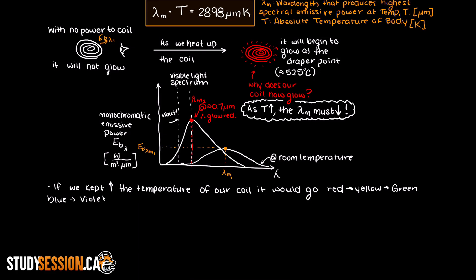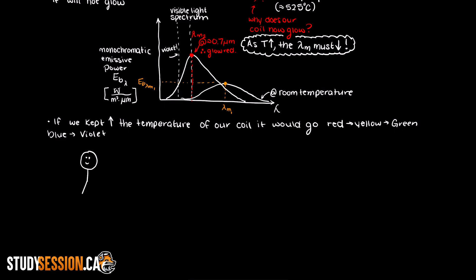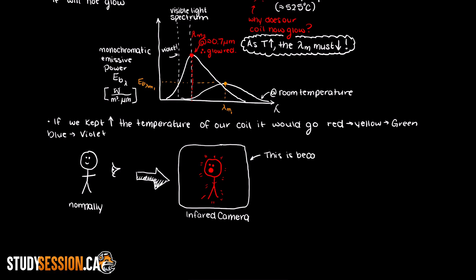Another example of these curves is the human body. Now obviously we humans aren't glowing to the naked eye, however if you observe humans or most mammals under an infrared camera you would see people glowing as the emission curve will peak in the infrared region.